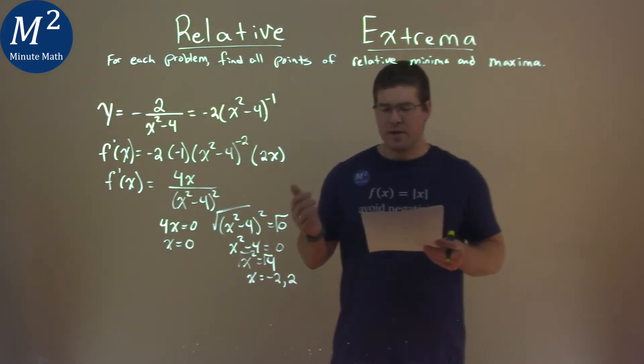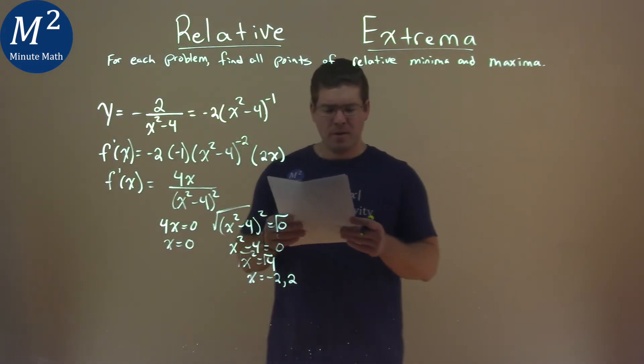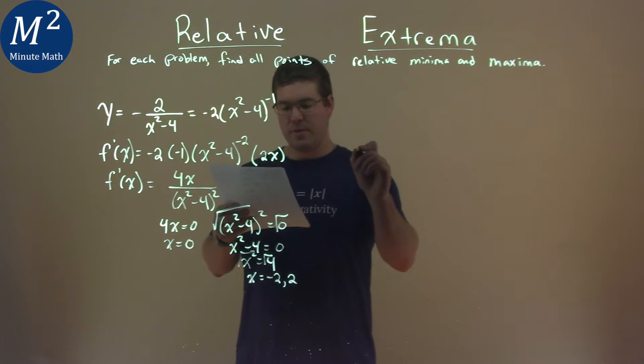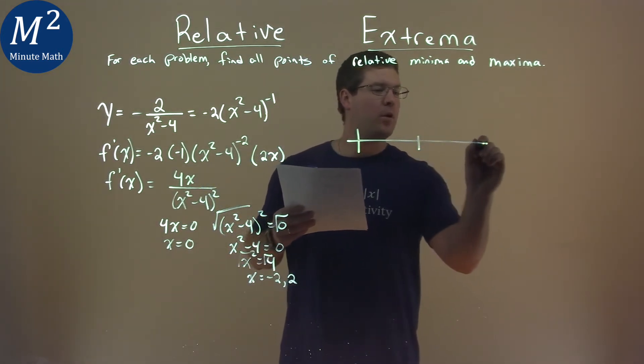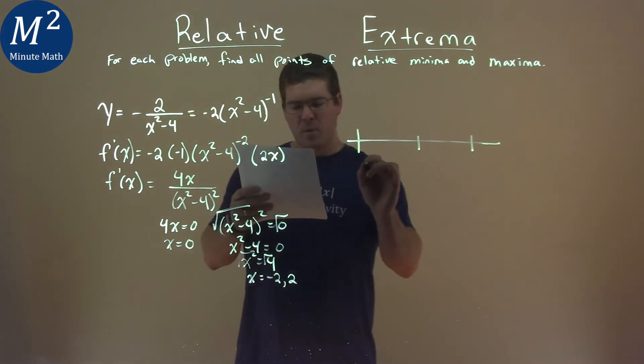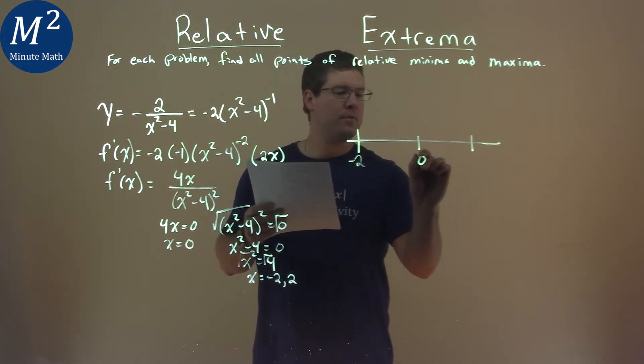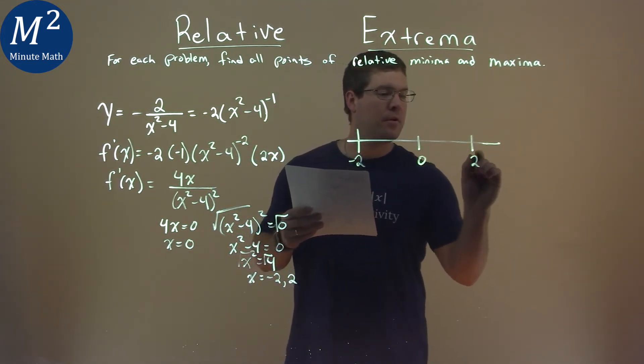So we have our three critical points here, and we need to use our first derivative test with them. So we're going to make a little chart here. We have negative 2, 0, and positive 2 right there.